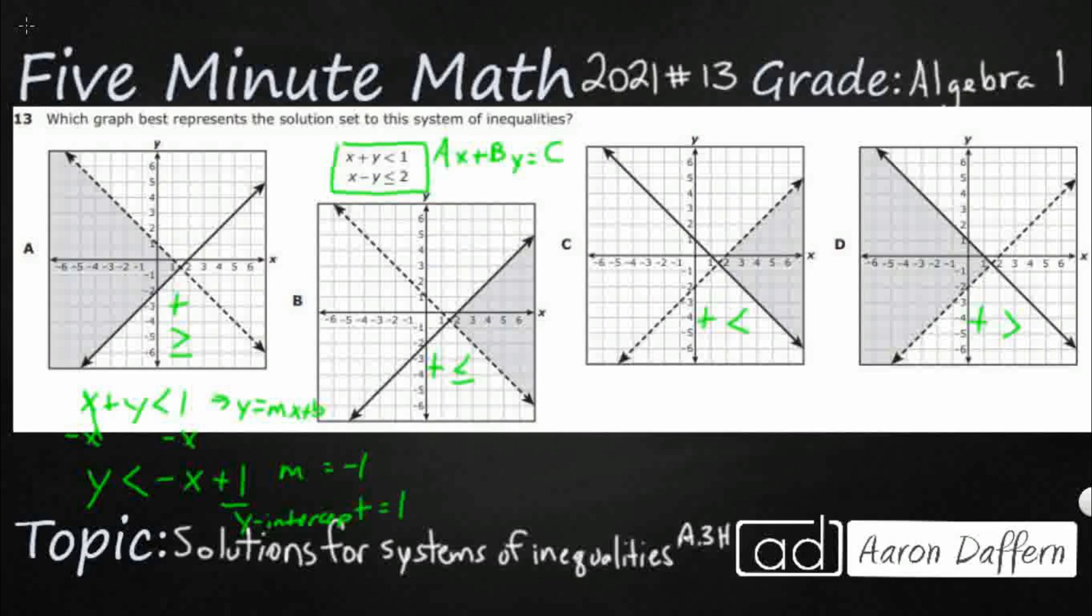So that's going to be this first line right here, the one that's got the negative slope. And what do we notice about it? Well, we notice that it is a less than. So I'm going to need a dashed or dotted line. So I'm going to get rid of C, I'm going to get rid of D. And we also notice that it's less than. So when it's less than, you actually shade below the line.